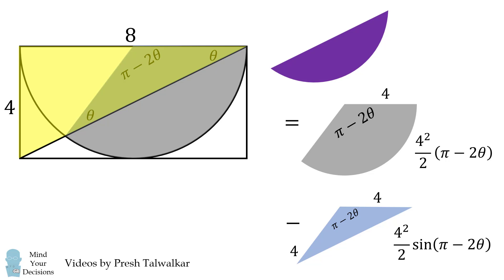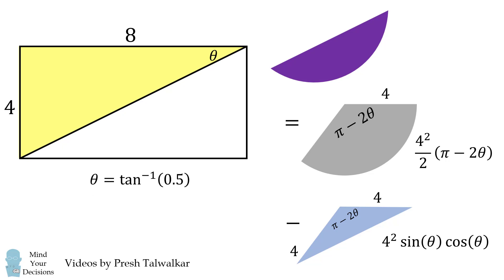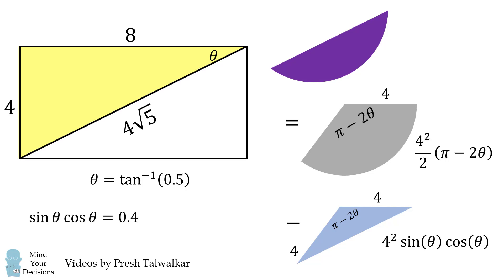So now we need to solve for this angle. Let's focus on this right triangle. Theta will be equal to the inverse tangent of 4 over 8, which is also equal to the inverse tangent of 0.5. Sine of π minus 2θ is equal to the sine of 2θ. We'll then use the double angle formula. We now need to know the sine of theta and the cosine of theta. We'll solve for the hypotenuse using the Pythagorean theorem, and then we can directly solve for the sine and cosine of theta. We multiply those together and it simplifies to be 0.4. So we can solve for the area of this isosceles triangle, which will be equal to 6.4.